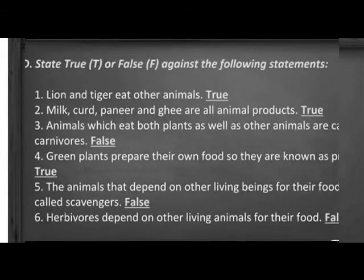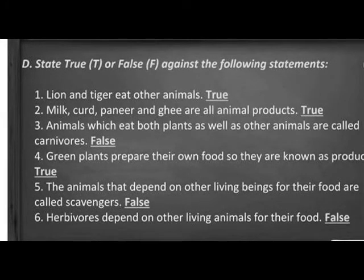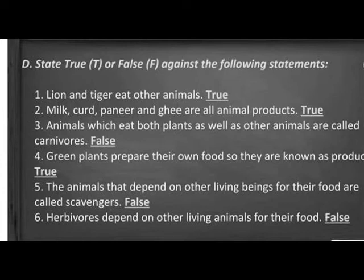True or false. Lion and tiger eat other animals — True. Milk, cod, paneer and deer are all animal products — True. Animals which eat both plants as well as other animals are called carnivores — False. Green plants prepare their own food so they are known as producers — True. The animals that depend on other living organisms for their food are called scavengers — False. Everyone depends on other living animals for their food — False.